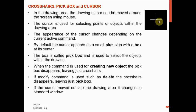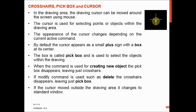The small box at the center of the cursor is called the pick box, and it is used to select objects within the drawing — such as a circle, line, or any other object. When a command is used for creating a new object, the pick box disappears, leaving just the crosshairs. When a modify command such as delete, move, or mirror is used, the crosshairs disappear and only the pick box remains to select the object.